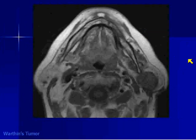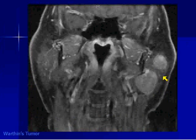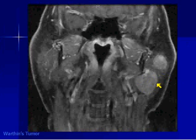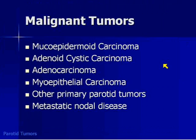Here's an example of a well-defined lesion — this one happens to be solid — in the tail of the parotid gland. This is a Warthen's tumor. There's no cystic element in this one, but it could be cystic, solid, or combined. This is the same patient — it's nicely enhancing, and you see a second lesion. He's a smoker, an older guy — this is more consistent with Warthen's tumor.